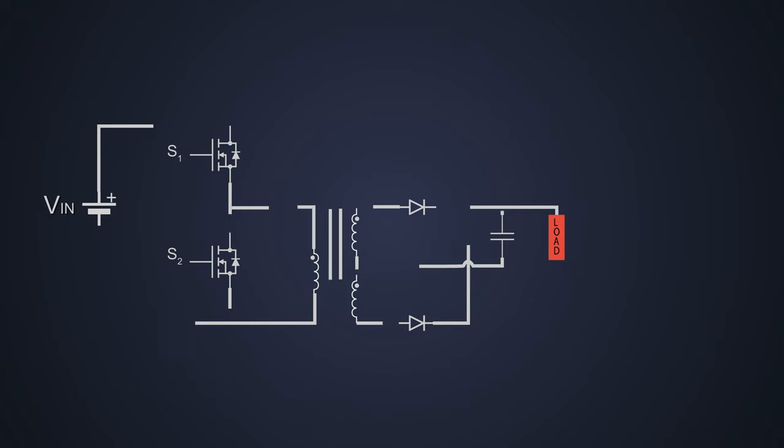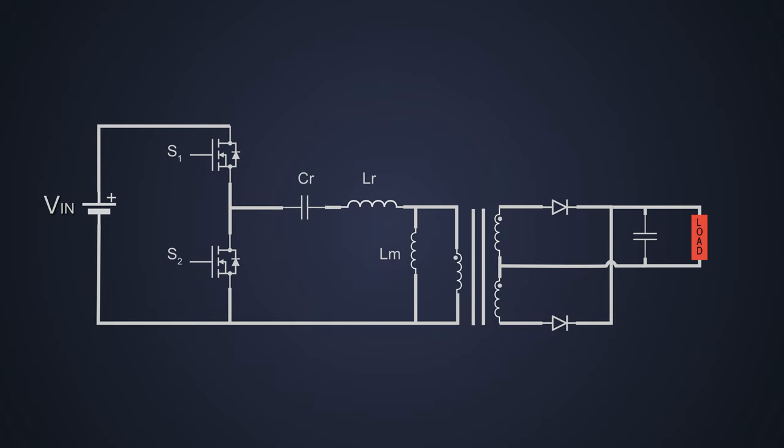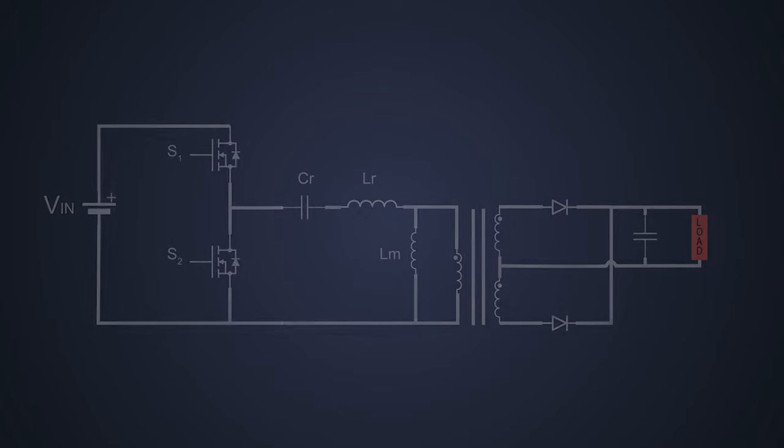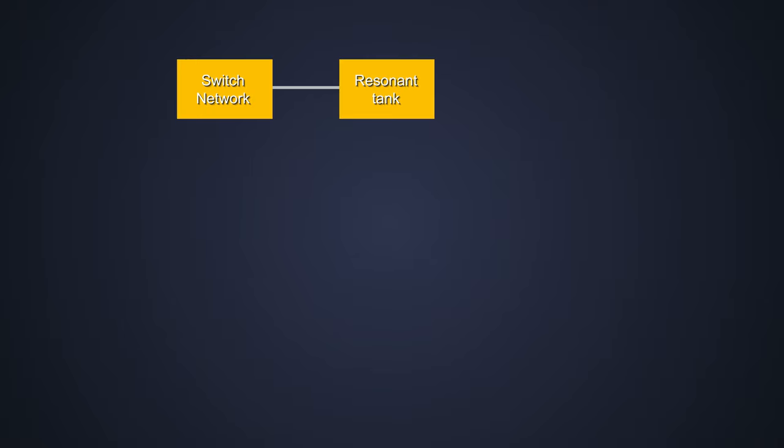So far we saw the normal power electronic switching converters with different isolated and non-isolated topologies. But when we add resonant circuits to those, it changes the whole look of the power electronic converter. A resonant converter consists of three sectors: a switching network, resonant tank or resonant circuit, and rectifier network.